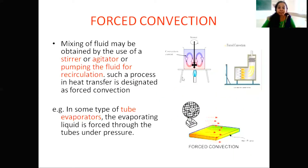Forced convection: mixing of fluid may be obtained by the use of a stirrer or agitator, or by pumping the fluid for recirculation. Such a process in heat transfer is designated as forced convection. In some types of tube evaporators, the evaporating liquid is forced through the tubes under pressure. In such cases, heat transfer occurs by forced convection mechanism.